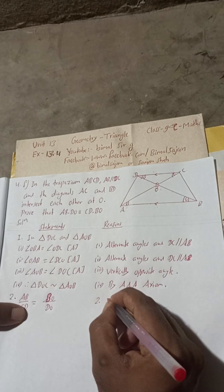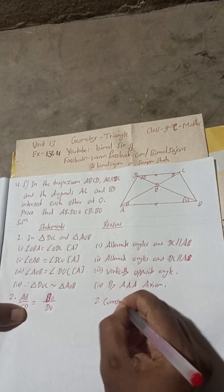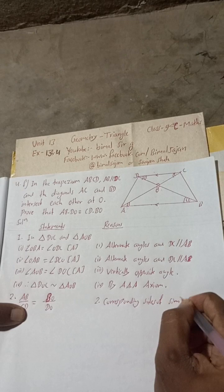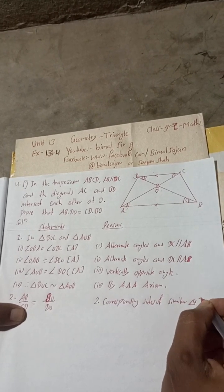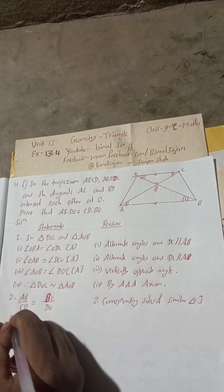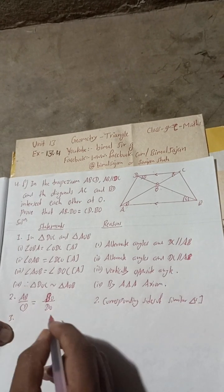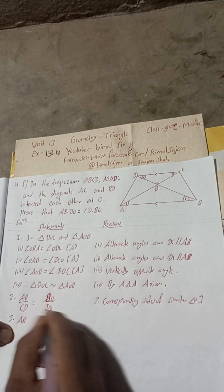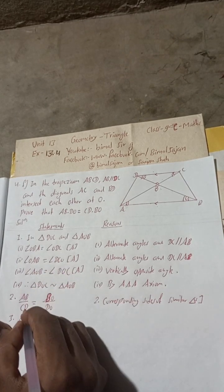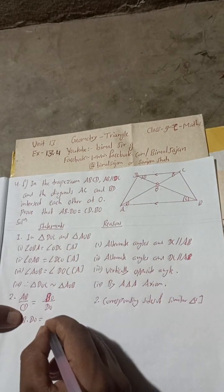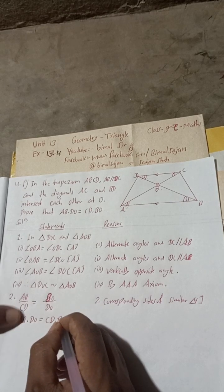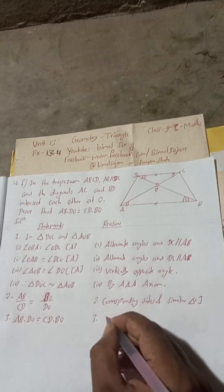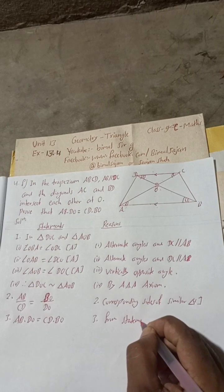Reason for this: corresponding sides of similar triangles. Statement 3, if we do cross multiply, this will be AB into DO. So AB into DO is equal to BO into CD or CD into BO. CD into BO proved.